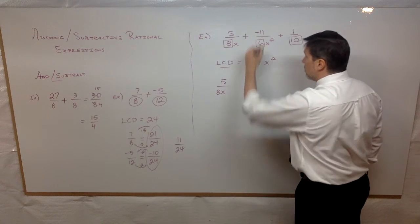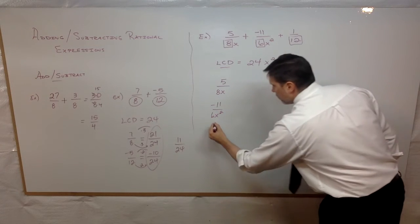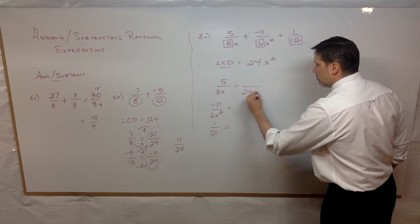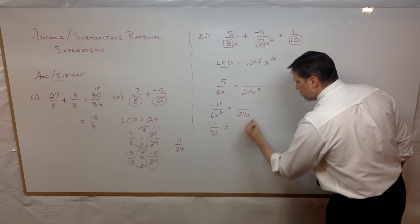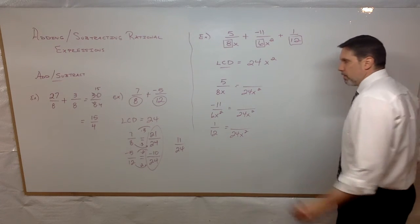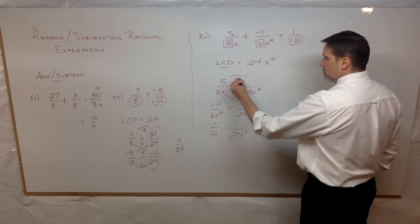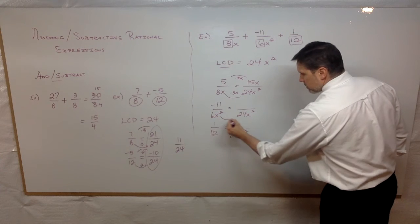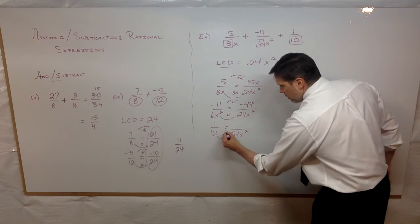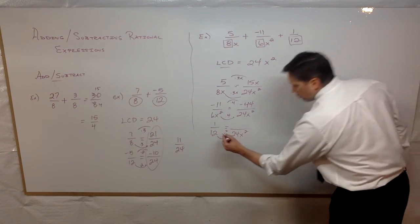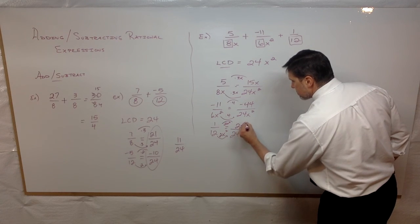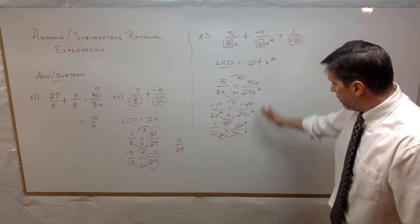We write 5 over 8x, negative 11 over 6x squared, and 1 over 12, each with the equivalent fraction denominator of 24x squared. We ask: 8x times what is 24x squared? That's times 3x, so we multiply the numerator by 3x to get 15x. Then 6x squared times 4 gives 24x squared, so we multiply the numerator by 4 to get negative 44. And 12 times 2x squared gives 24x squared, so we multiply 1 by 2x squared to get 2x squared in the numerator.